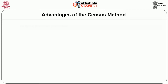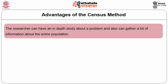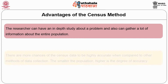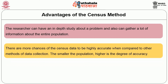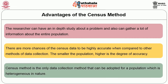The advantages of the census method are: the researcher can have an in-depth study about a problem and can gather a lot of information about the entire population. There are more chances of the census data to be highly accurate when compared to other methods of data collection. The smaller the population, the higher the degree of accuracy. Census method is the only data collection method that can be adopted for a population which is heterogeneous in nature.